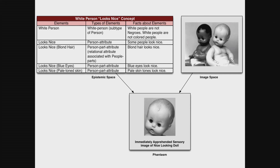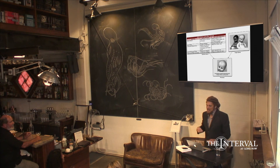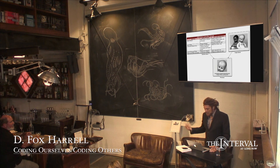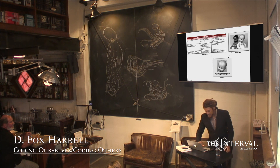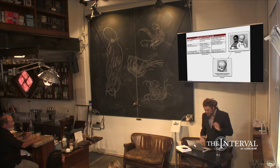This is just a cursory breakdown, thinking in terms of the types of elements, the attributes, and so forth, just to show that when we think about these issues on the computer, we actually have to think about how they're instantiated in data structures and the way they're implemented — such as when a doll is immediately apprehended as being the nice-looking doll.